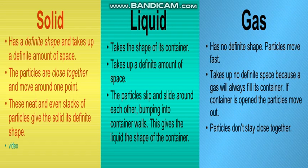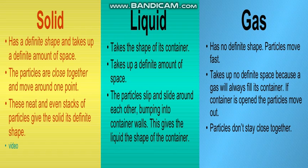One by one I will tell you in detail about these three states. First of all, the first state: solid. What is solid and what are the properties of solid? In a solid, the particles are very close together — they are tightly packed. There is no space or negligible space between them.